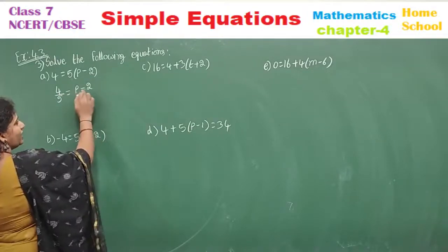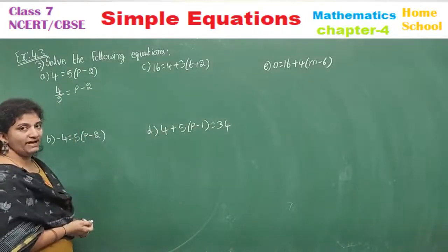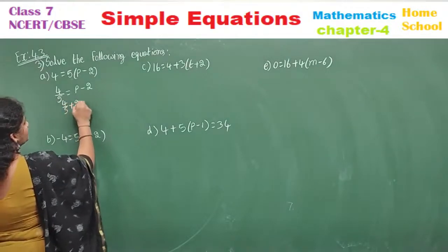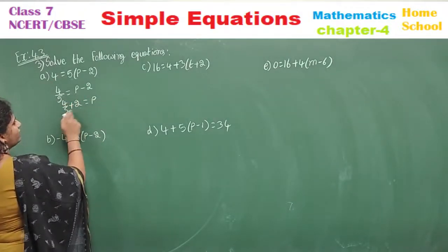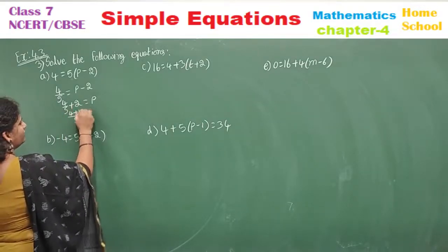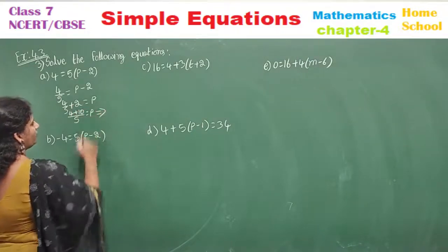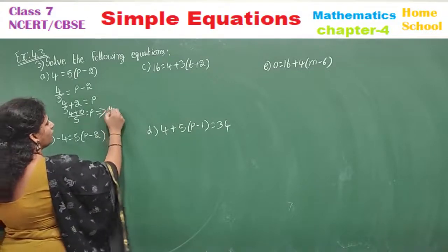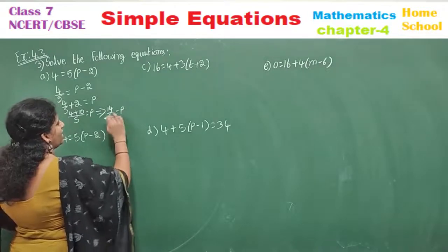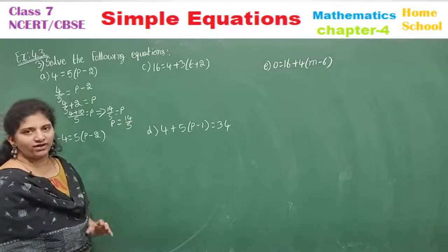Other than the variable, minus 2 is extra. Transpose it to the other side — it becomes plus 2. So we have 4 by 5 plus 2 equals p. Do LCM of 5 and 1, LCM is 5. That gives 4 plus 10 equals 14, so p is equal to 14 by 5.